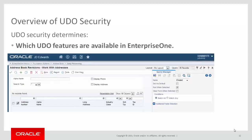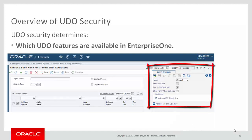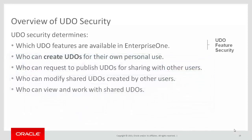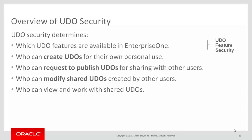For example, here you can see that the Query Manager, which is the design panel for creating queries, is available in this application because the Query feature was activated through UDO feature security. To set up permissions to determine who can create UDOs, request to publish or share UDOs, or modify shared UDOs, you use UDO action security.